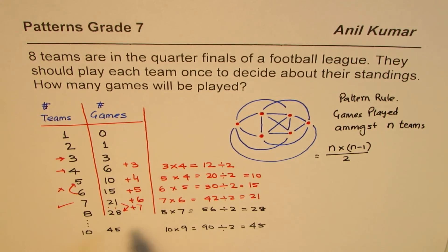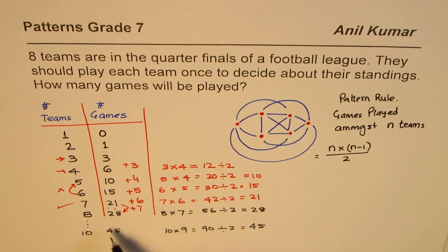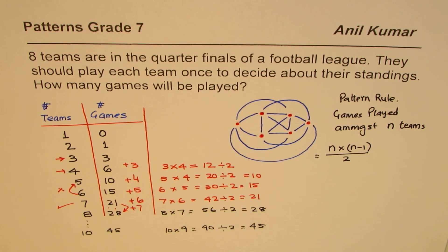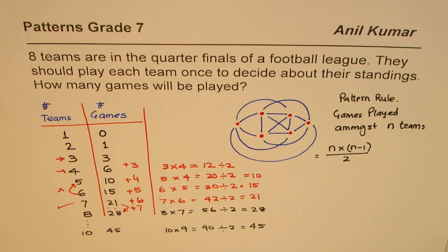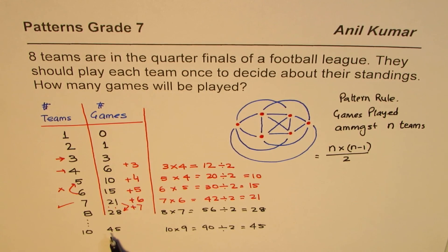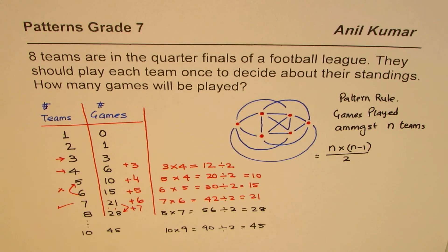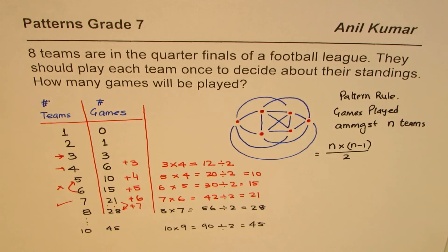You get an idea — that is how you make a rule, test it out, and find how many games will be played. You can apply the same method for another example: if people come to a meeting and everyone does a handshake once, and there are ten people, how many handshakes will there be? You can use the same formula and find the result as forty-five. I hope that helps. I'm Anil Kumar — please share and subscribe. Thank you, and all the best.